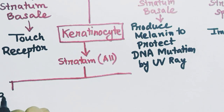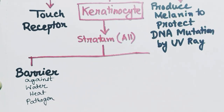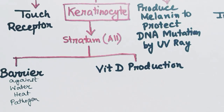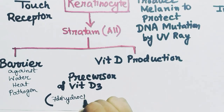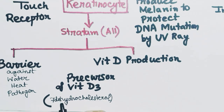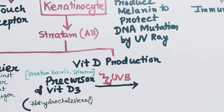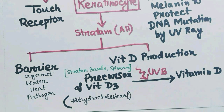Keratinocytes have two functions: first, to make a barrier against water, heat, and pathogens; second, production of vitamin D. The precursor of vitamin D3, 7-dehydrocholesterol, is present in the stratum basale and stratum spinosum keratinocytes. In the presence of UVB rays, this precursor becomes vitamin D. After epidermis comes the next layer of the skin — the dermis — which will be discussed in the next video, Part 2 of skin histology.